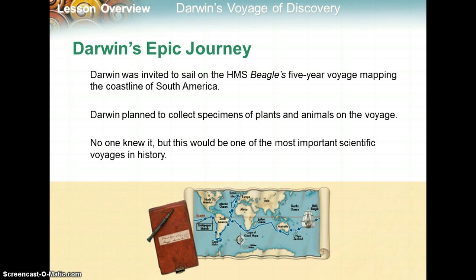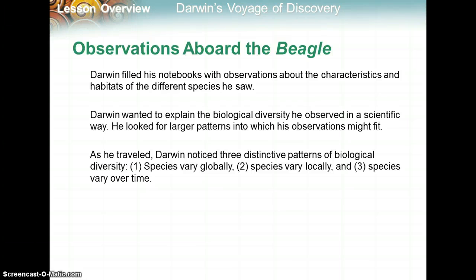Darwin was invited to sail on the HMS Beagle, a five-year voyage mapping the coastline of South America. Darwin planned to collect specimens of plants and animals, and this would become one of the most important scientific voyages in history. Darwin filled his notebooks with observations about the characteristics and habitats of different species. He wanted to explain the biological diversity he observed scientifically. He noticed patterns: species vary globally, species vary locally, and species vary over time.